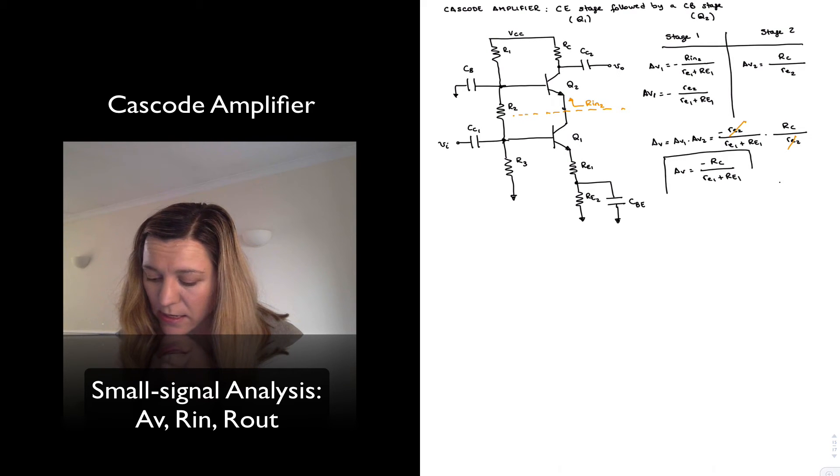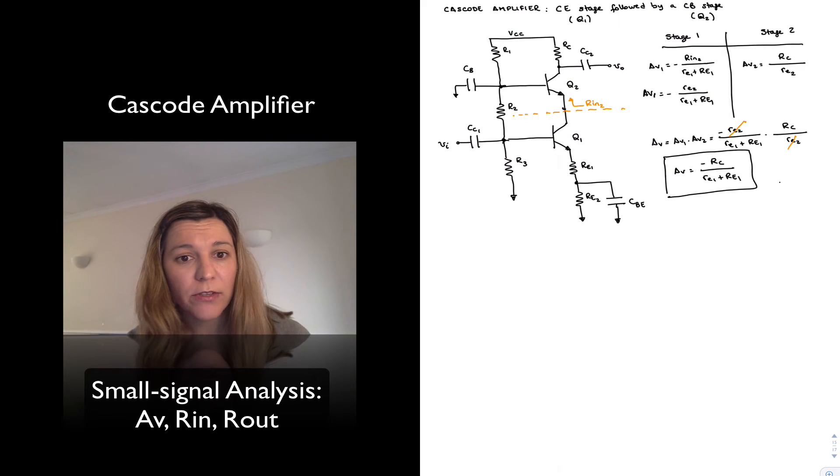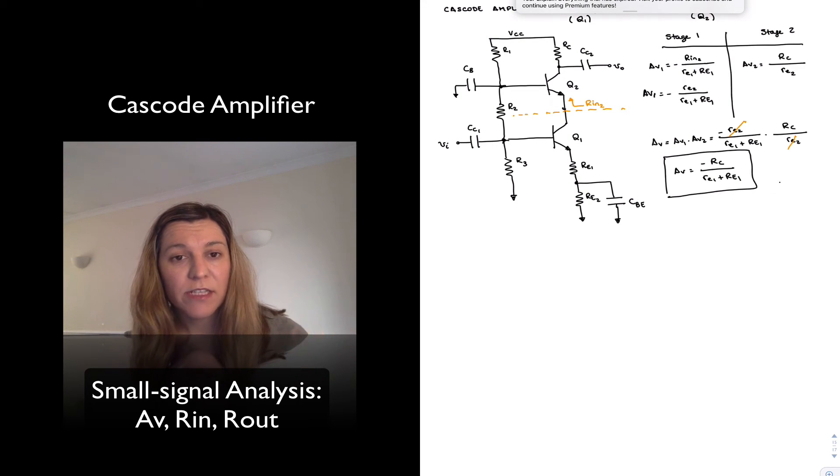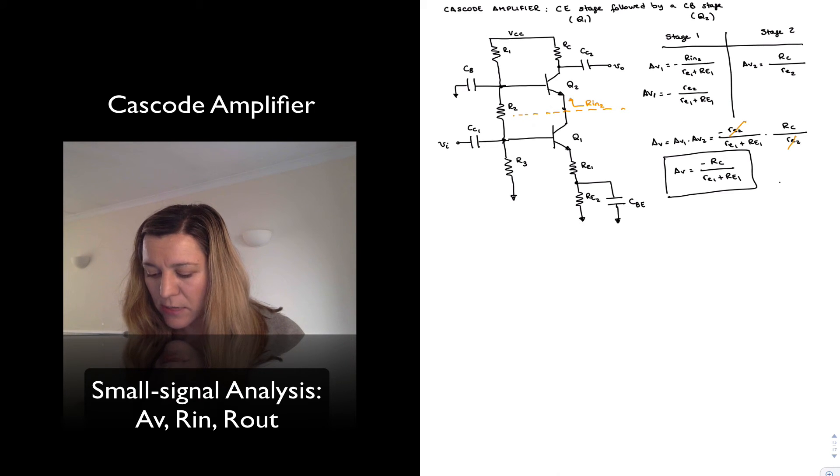And this is an important result. The reason for that is that notice the symmetry with respect to the common emitter and the common base. The voltage gain for the cascode amplifier ends up being the ratio of the overall resistance connected to the collector of the output stage divided by the overall resistance connected to the emitter of the input stage. Very similar or very symmetric to how the common emitter and common base operated. It's still an inverting amplifier because we have an inverting stage followed by a non-inverting stage.